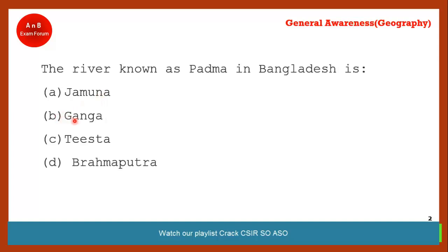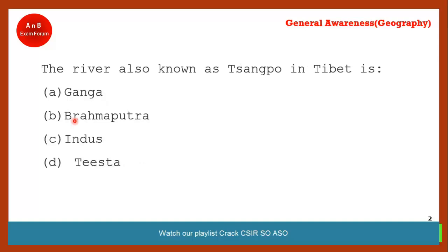Coming to the next question: which river is also known as Sangpo in Tibet? The correct answer is option B — Brahmaputra. You must have heard of Yarlung Tsangpo in Tibet. When it enters Arunachal Pradesh it is known as Siyang or Dihang. For students who don't know about these rivers, you can watch our previous chapter where we covered rivers of India.